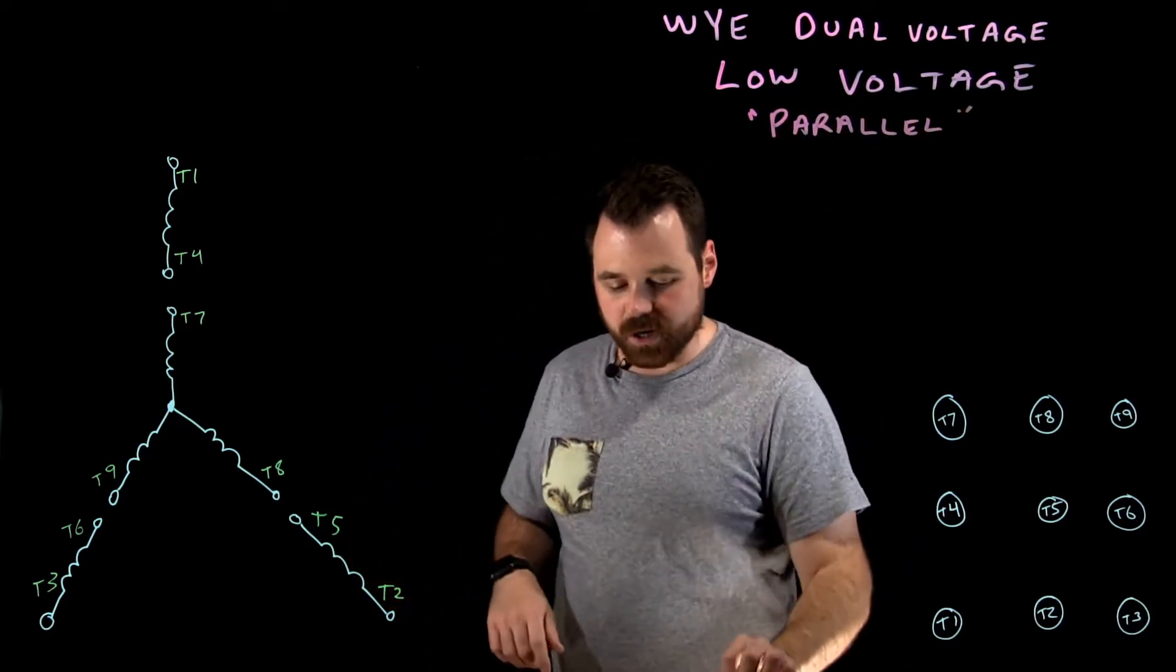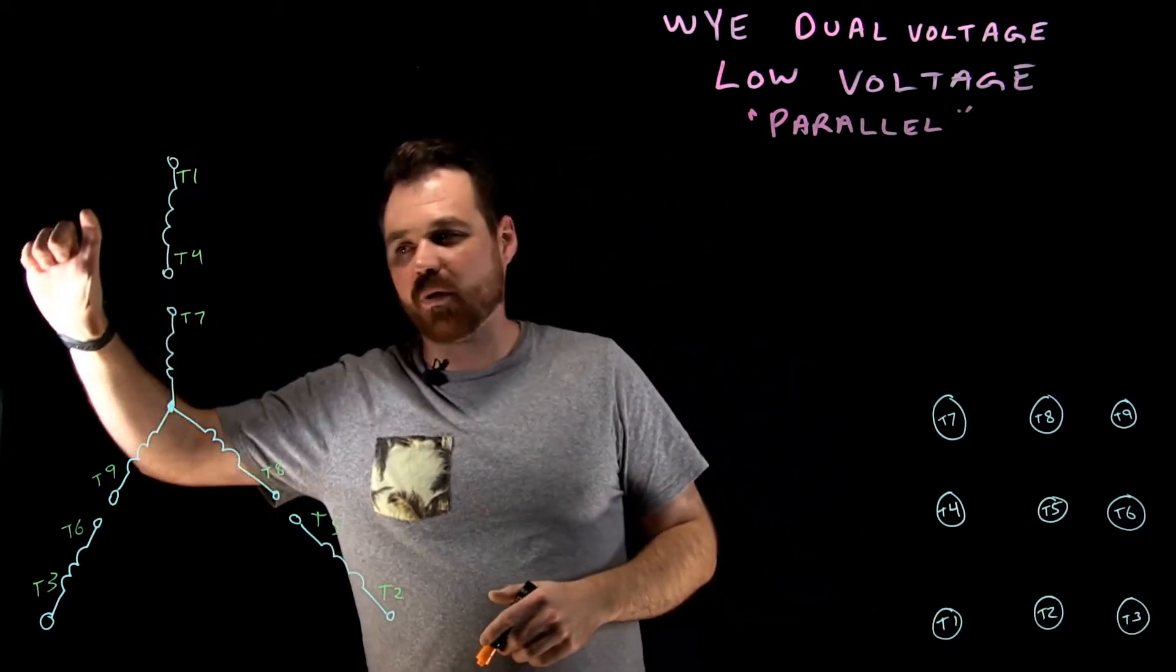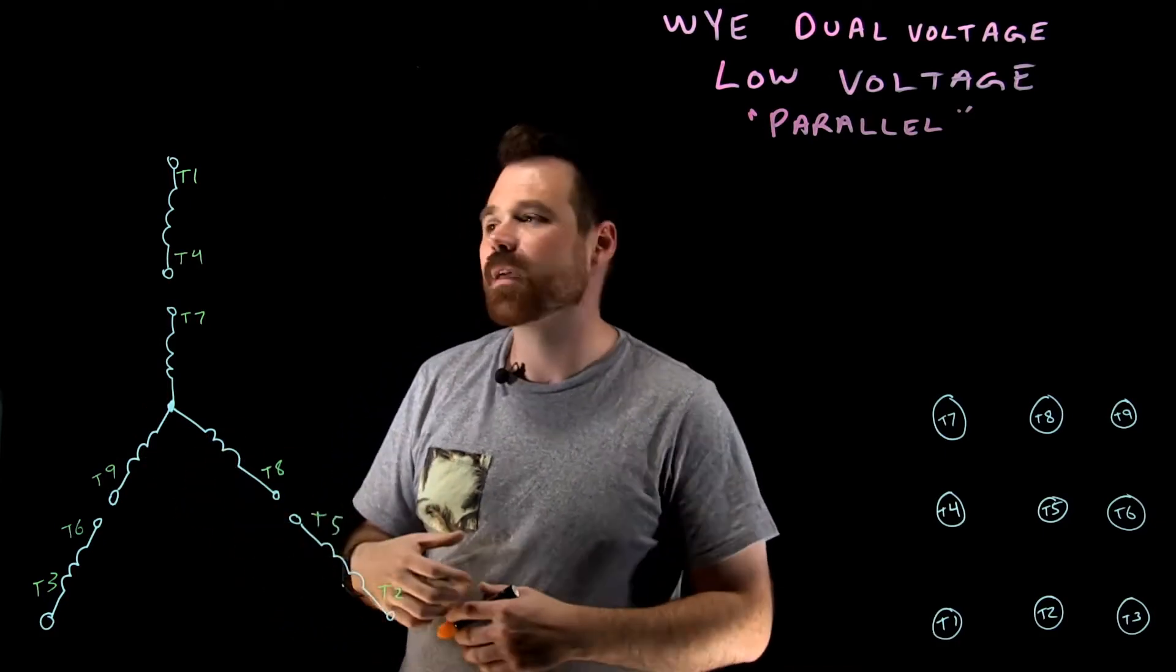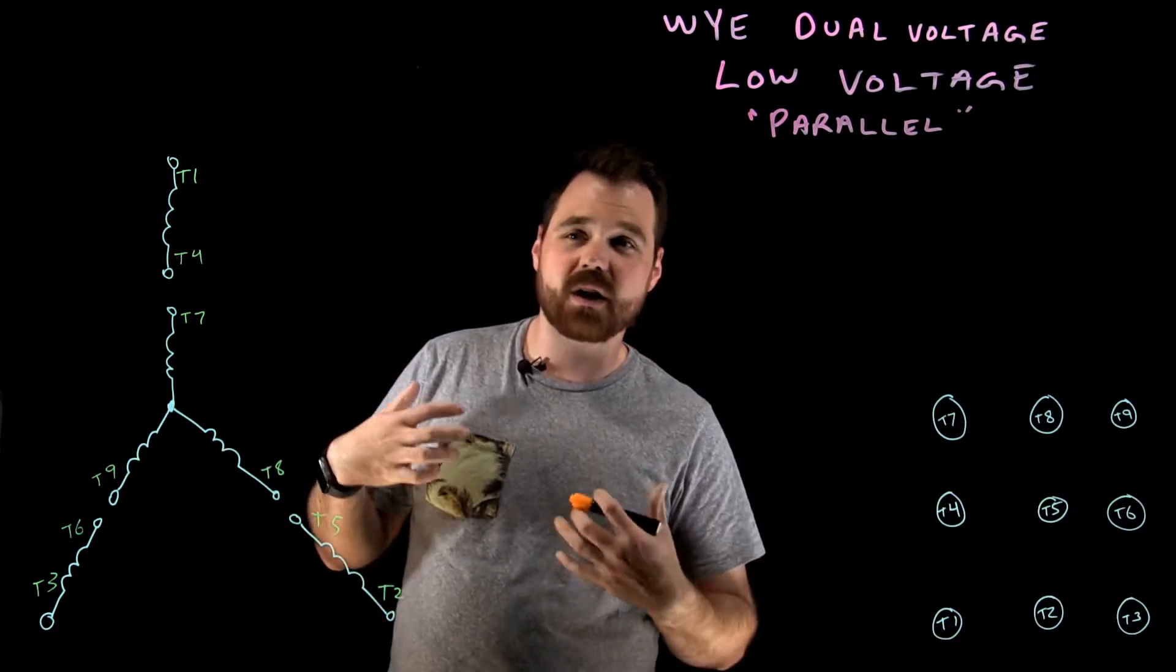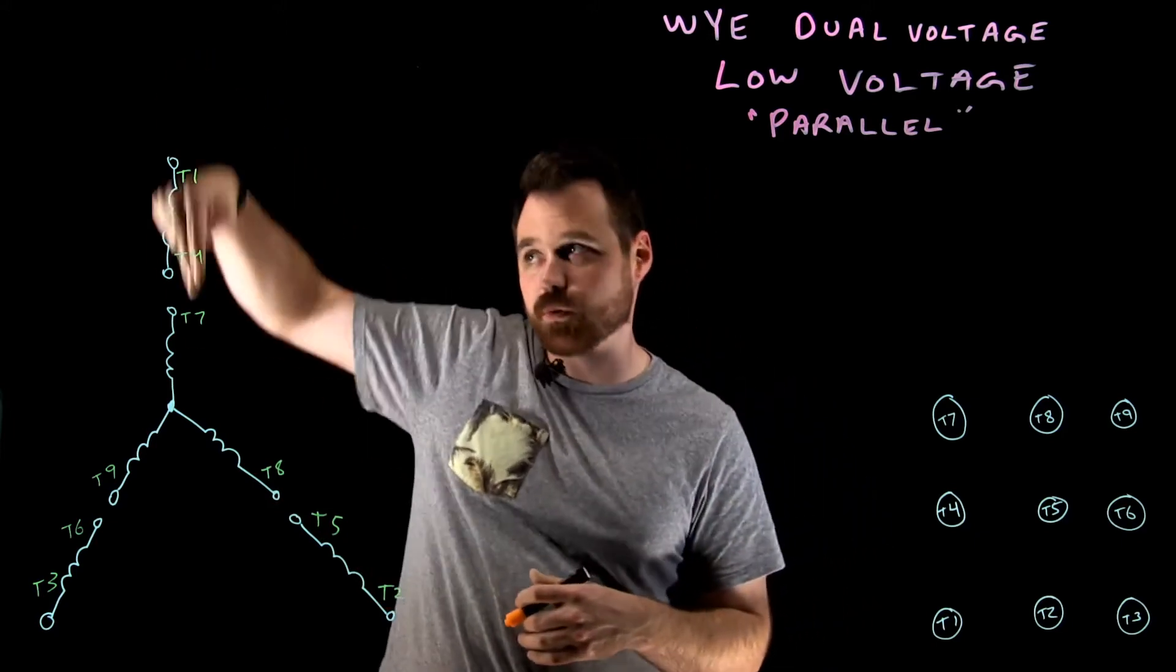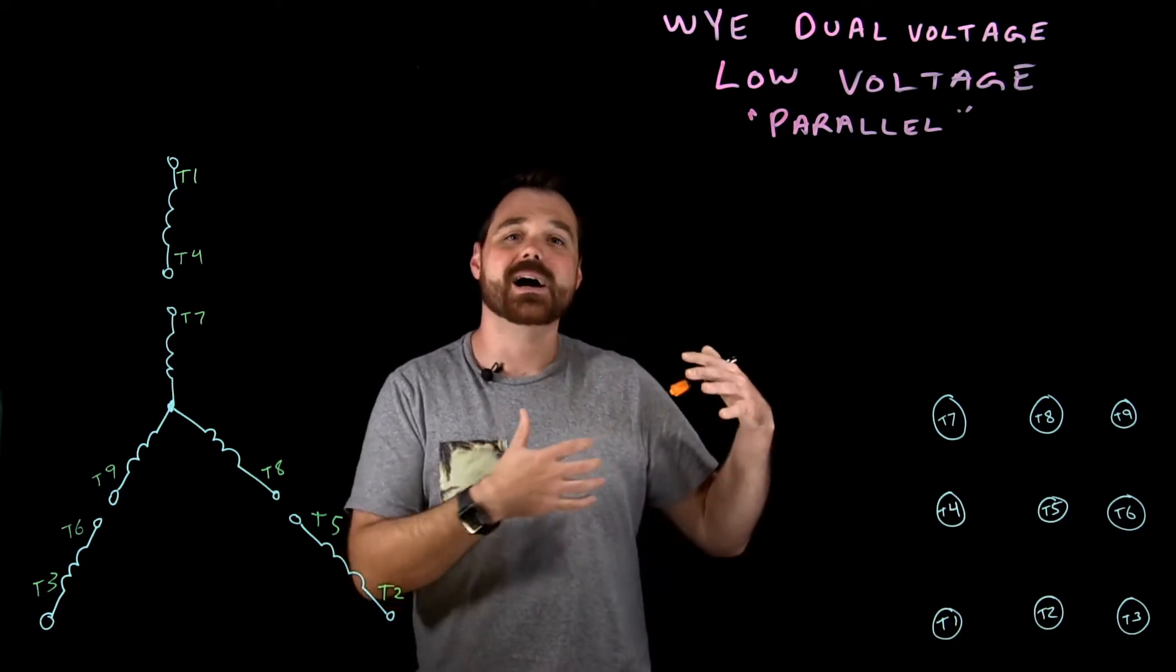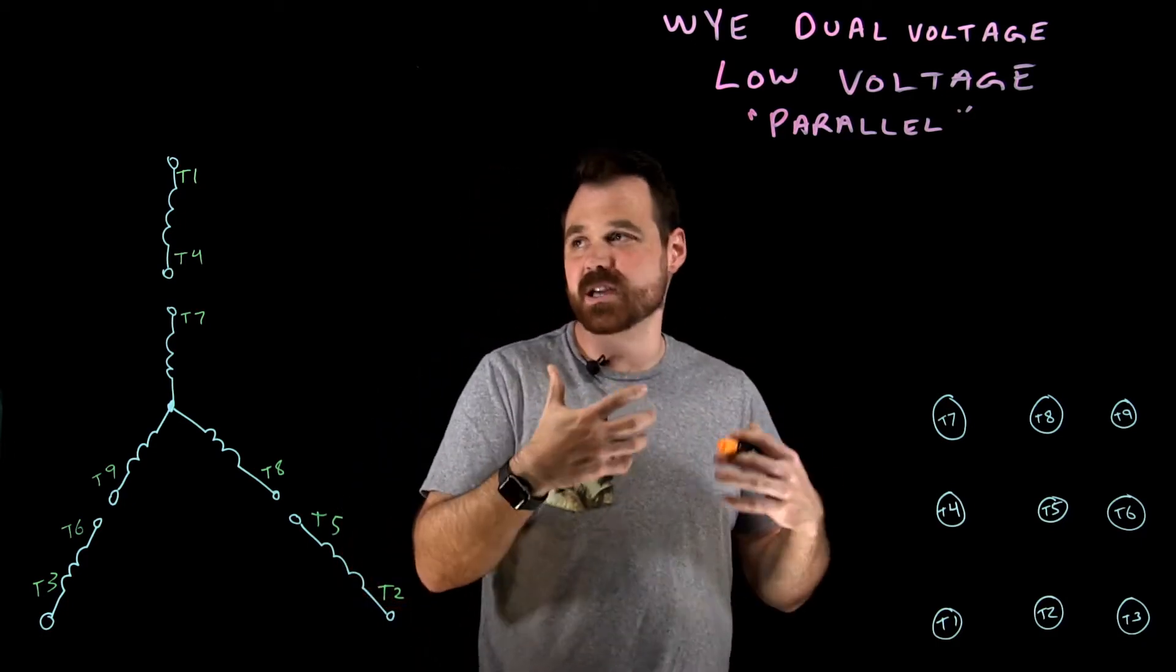Now what I want to do here is put this T1 and T4 winding in parallel with my T7 and T10 winding. Because they're going in parallel, it's really important that we keep the polarity matching so that current flows through them in the same direction, ensuring that the rotating magnetic field stays constant.